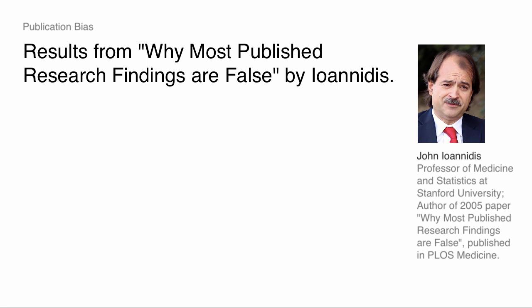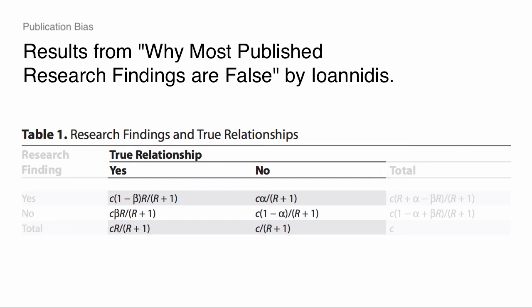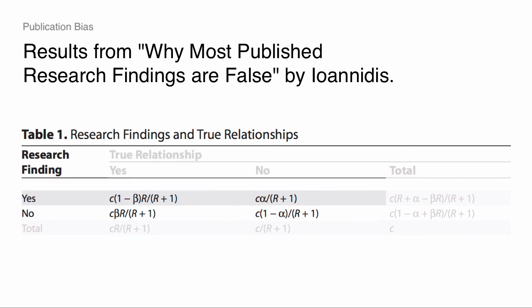Let's go through the Ioannidis result and walk through it. This is a two-by-two table. The existence of a true relationship in this abstract way is captured in the yes-no columns — these are relationships that exist. In terms of the rows, this is the case where I reject the null — I have a research finding that rejects the null. That's the yes-row. The no-row is I don't reject the null.